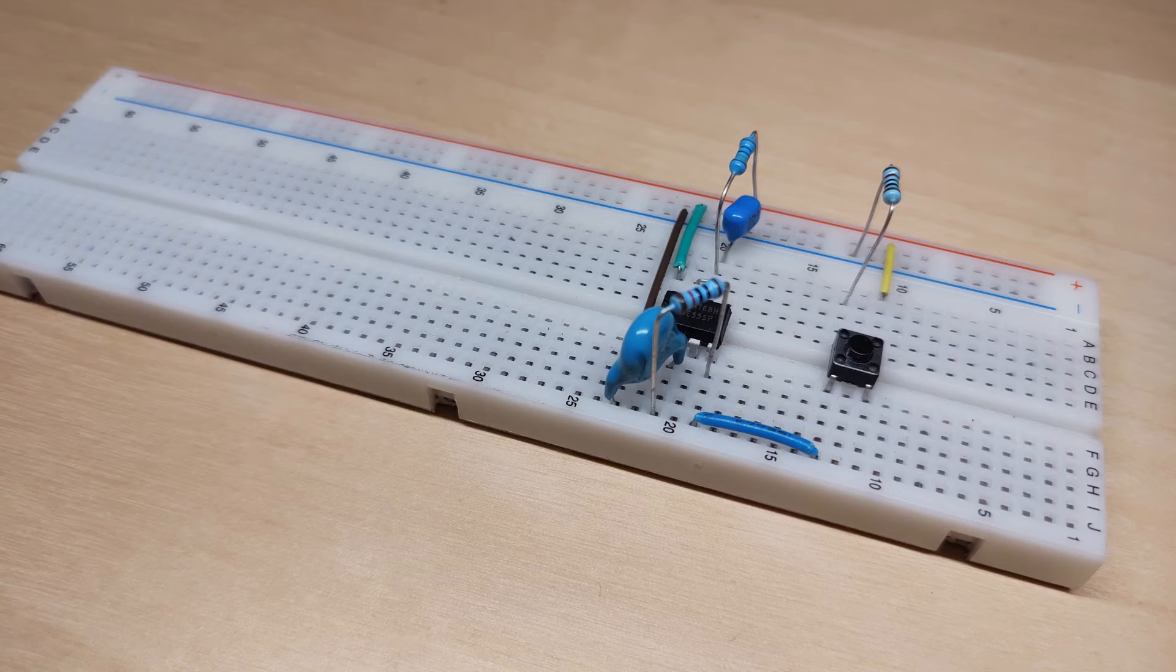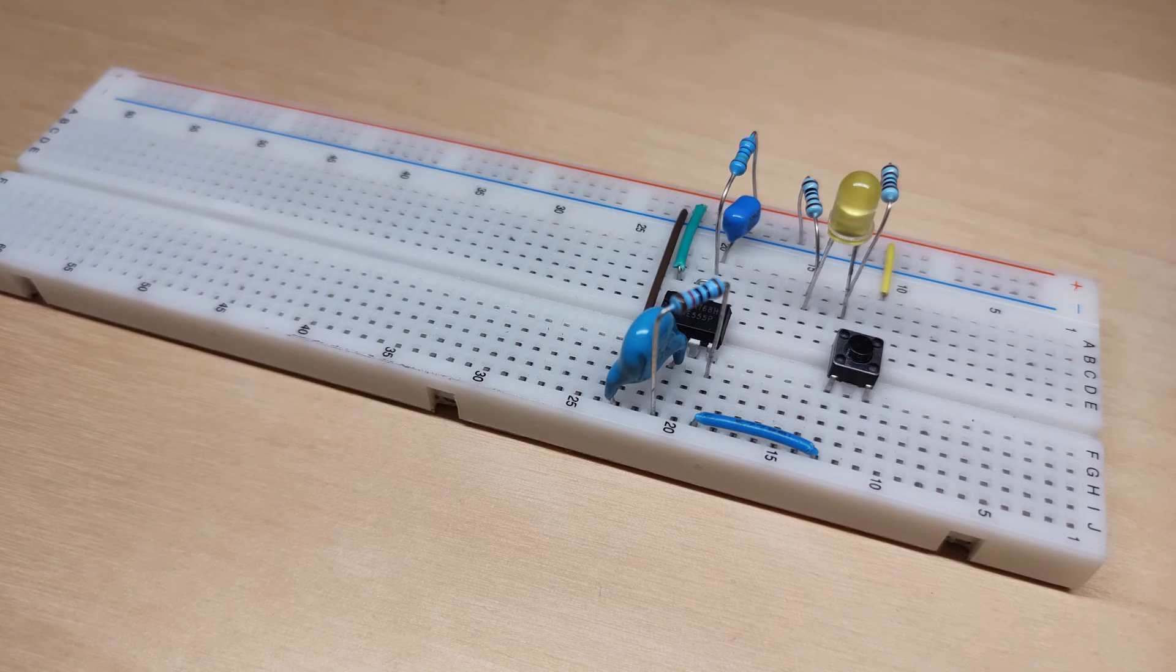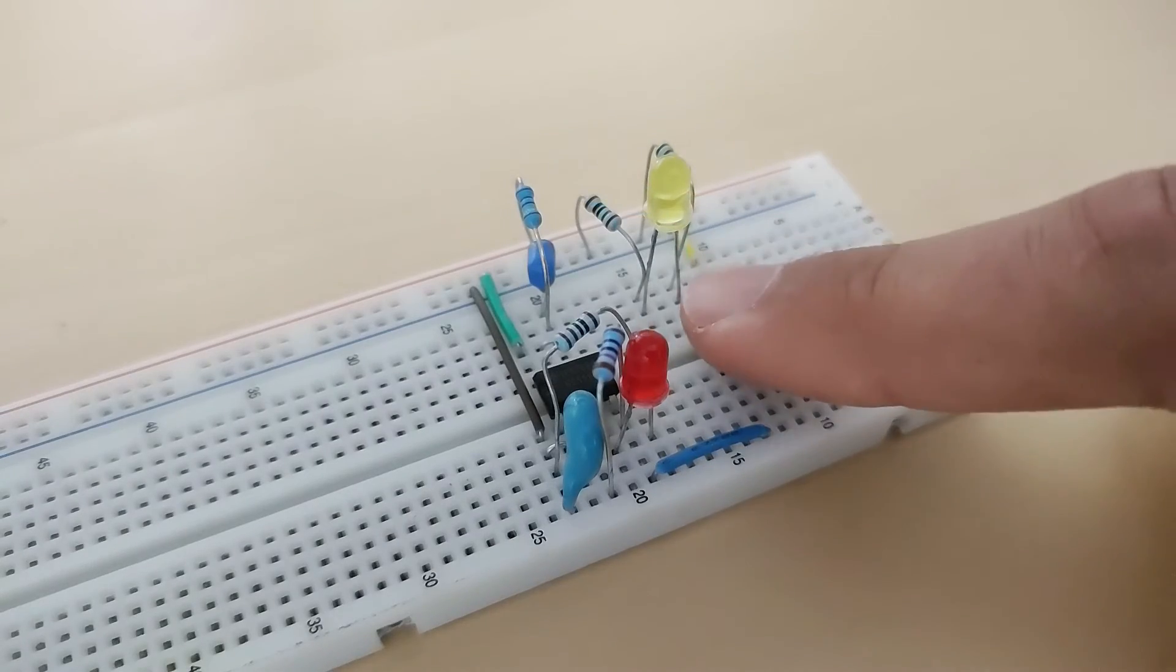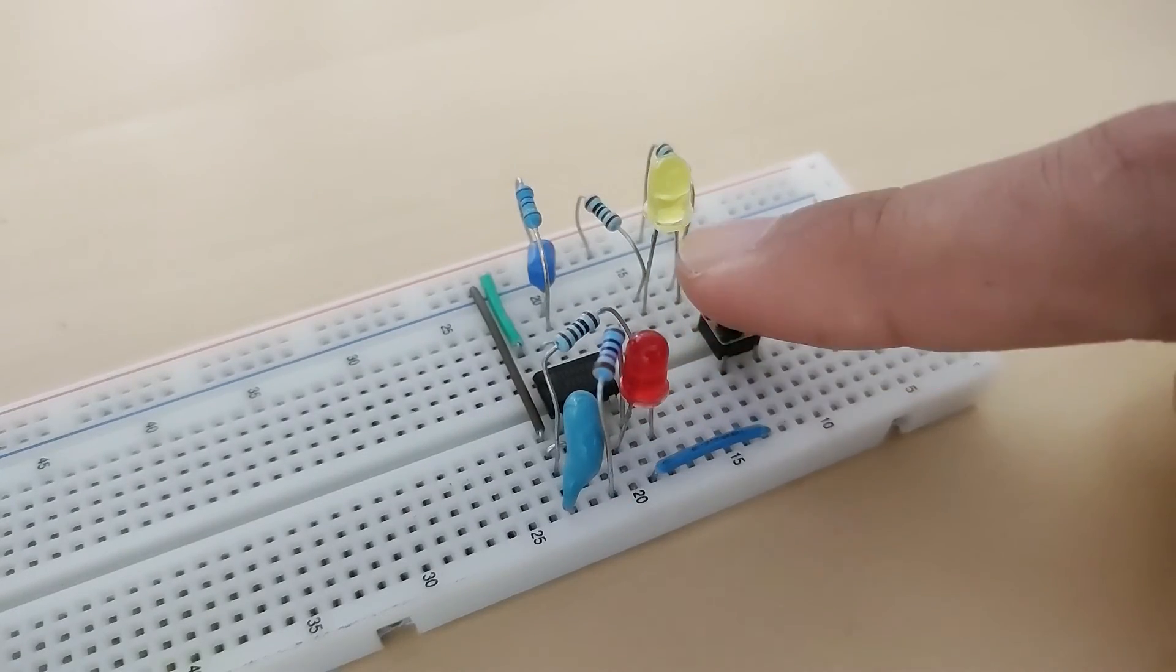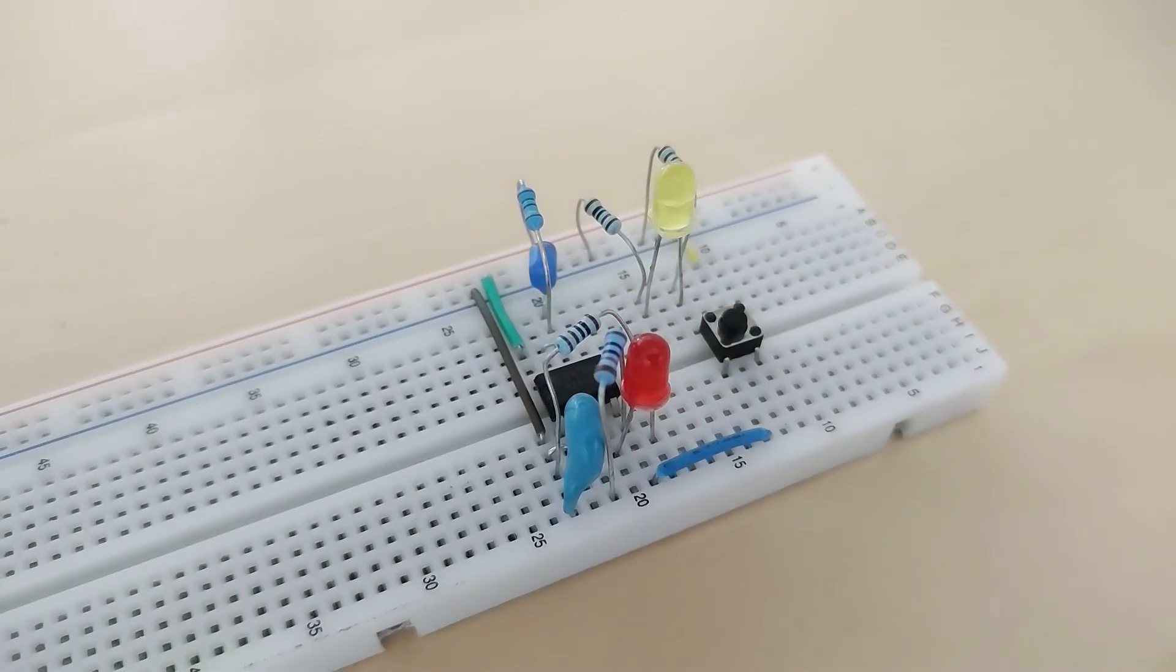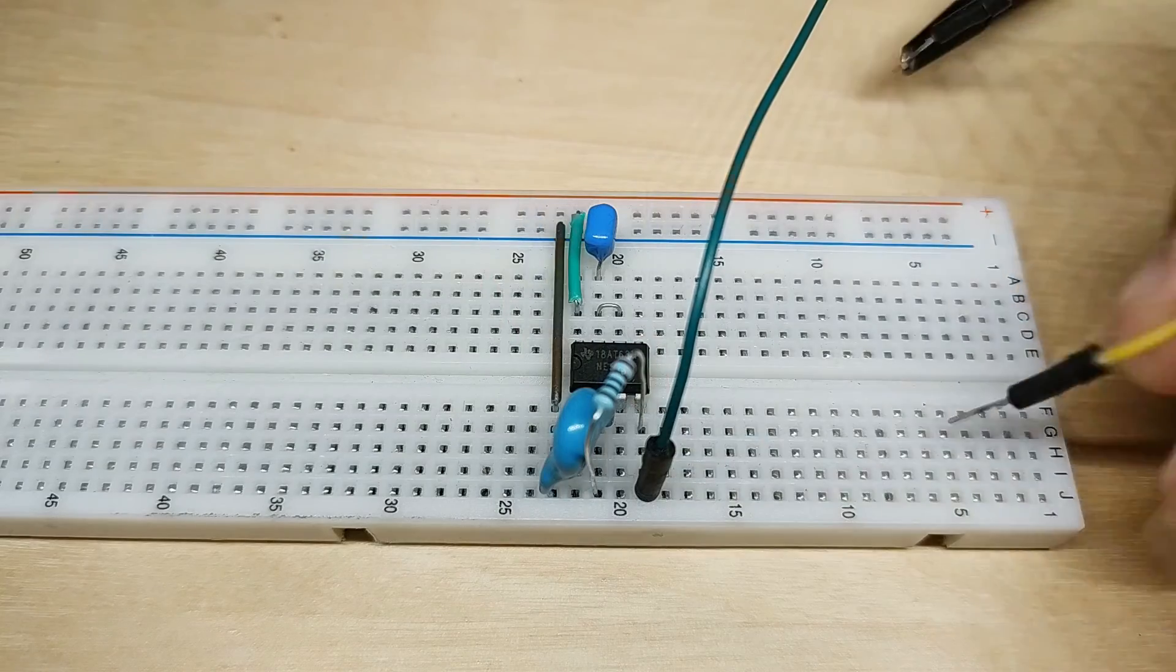Next I attach a push button with pull down resistor to the input number four which is the reset pin. And to better visualize what's going on I can attach an LED with current limiting resistor to the input which is the switch, and an LED to the output which is pin number three, always with a 1k resistor. Now you can see when I push the button the input LED stays on while the output LED turns on momentarily and turns off by itself.